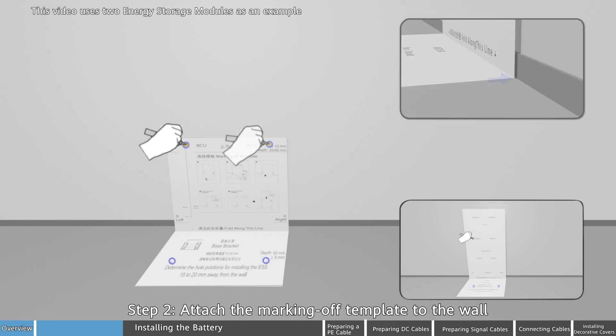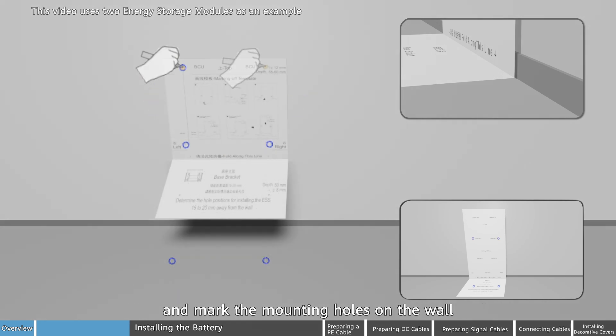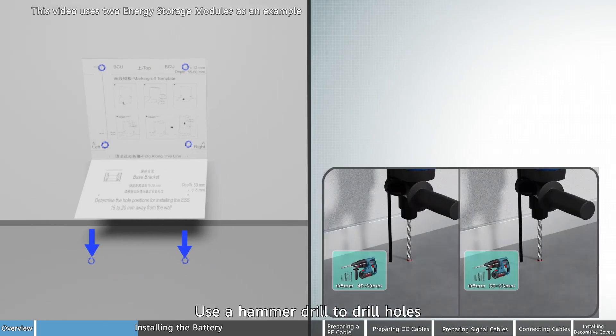Step 2: Attach the marking off template to the wall and mark the mounting holes on the wall. Use a hammer drill to drill holes.